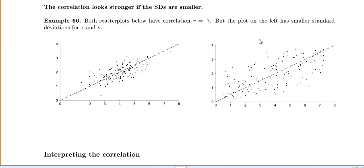So both scatter plots below have a correlation of r equals 0.7. But this plot has smaller standard deviation for x and standard deviation for y.